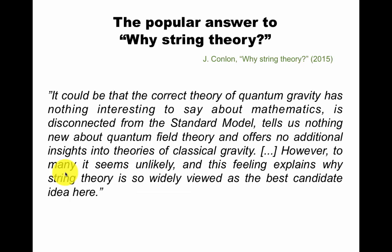Classical gravity and the Standard model are clearly important, experimentally well-established topics, so if string theory helps to understand them, that could be interesting. The other ones are new ideas about the future. The popular answer was given by Conlon in his book. It could be that the correct theory of quantum gravity has nothing interesting to say about mathematics, is disconnected from the Standard model, tells us nothing new about quantum field theory, and offers no additional insights into theories of classical gravity. However, to many it seems unlikely.